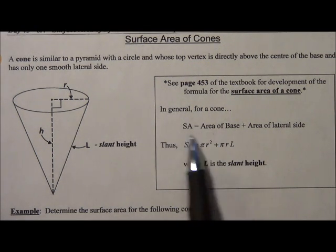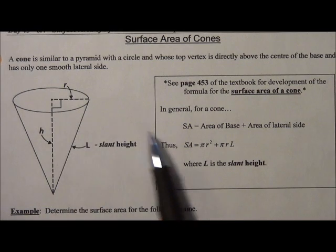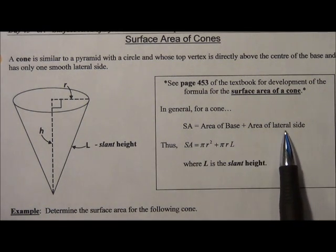the surface area of a cone is the area of the base, that would be that circle, which is pi r squared, plus the area of the lateral side.